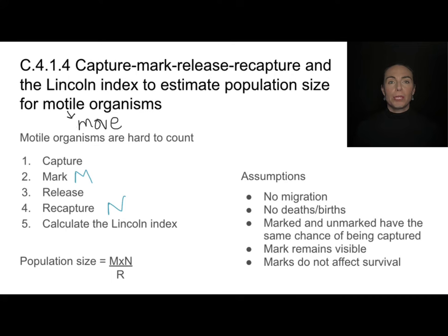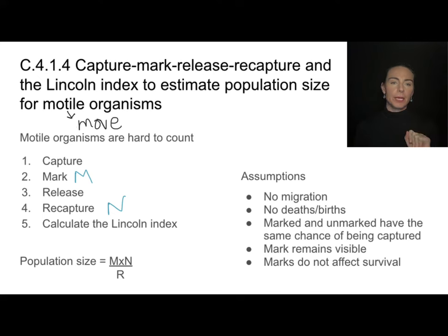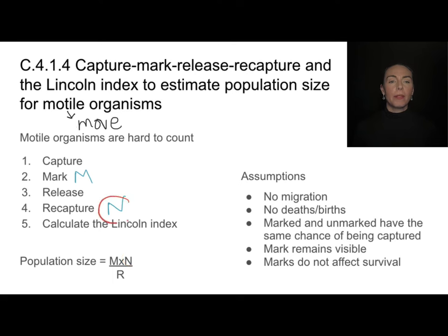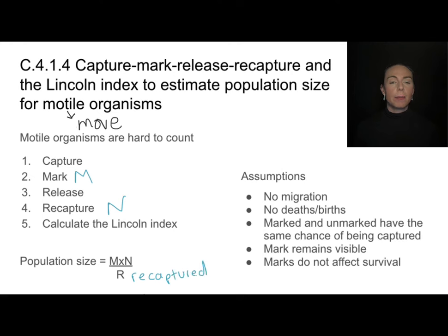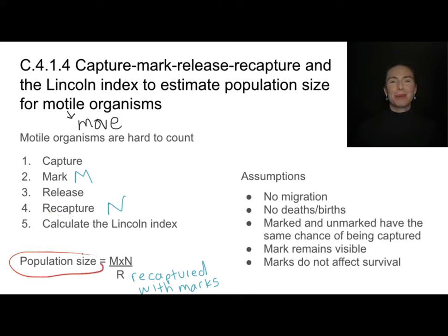The number I recapture the second time is designated as n — it doesn't have to be the same number as the first capture; it might be 100. Then I calculate the Lincoln index using this formula: take the number marked (m) multiplied by the number recaptured (n), divided by r. R is the number recaptured that have marks on them — the ones caught twice. This ratio estimates the total population size.